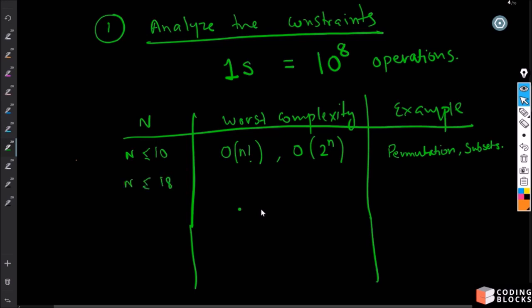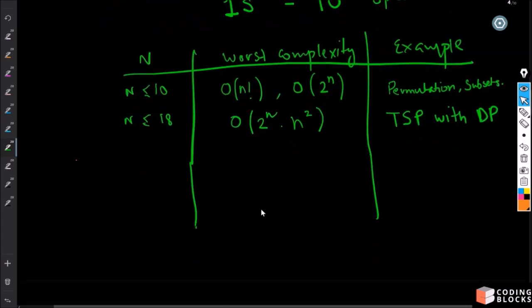If N ≤ 18, the worst complexity you can have is O(2^N × N²). An example is the Traveling Salesman Problem (TSP). If N ≤ 22, the worst case complexity is O(2^N × N), and this kind of technique is used in DP with bitmasking.